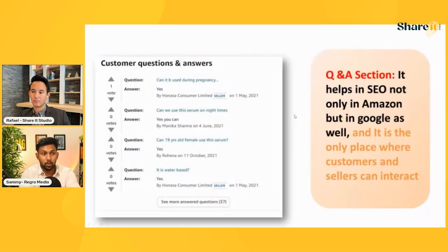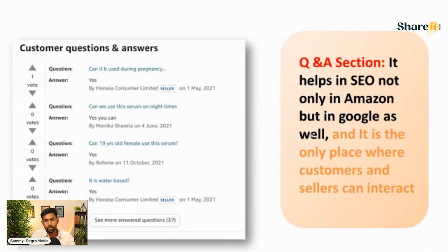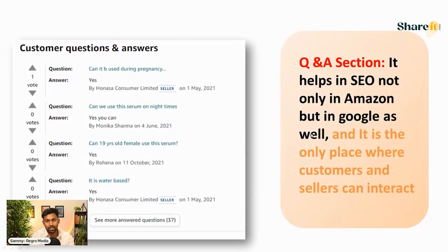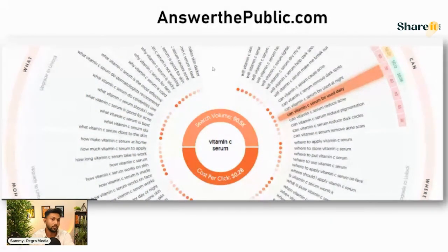The Q&A section also plays a role in conversion rate — and it has SEO value not just on Amazon but also on Google. If someone searches a question in Google and your listing has that answer, your listing can show up. A good resource for finding relevant questions is answerthepublic.com — put in your keyword, see all the related highly-searched questions, create keyword-rich answers, and those will influence your SEO and expand the keywords you're indexed for.